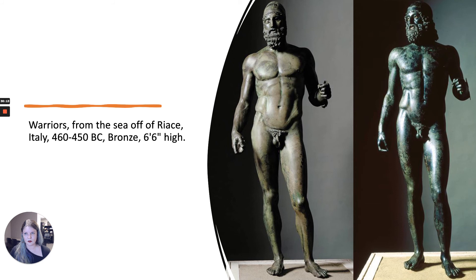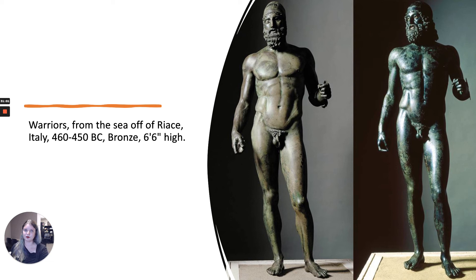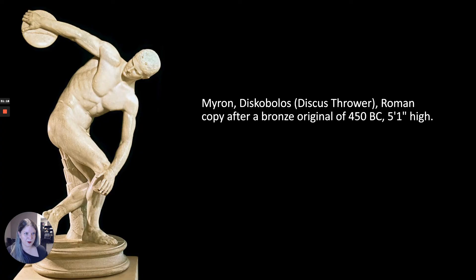These are the Riace Bronzes, continuing the investigation into more naturalized stances that started with the Kritios Boy. These were actually found in the sea — fished out, which is where they were discovered. They're six feet six inches tall — quite large. Again, there's an interest in naturalism and the way musculature and bone structure works in the body. It's amazing that they sat at the bottom of the sea and are still in such good shape.